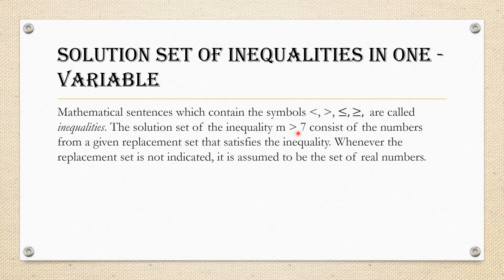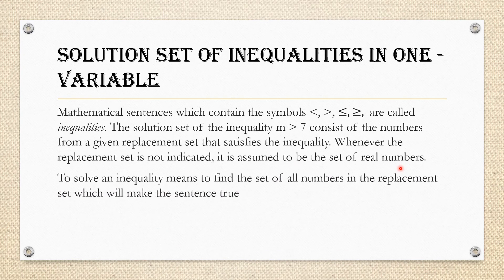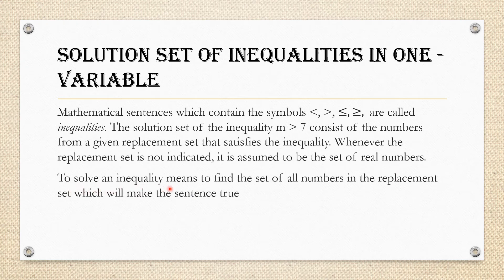The solution set of the inequality m greater than 7 consists of the numbers from the given replacement set that satisfies the inequality. Whenever the replacement set is not indicated, it is assumed to be the set of real numbers. To solve an inequality means to find a set of all numbers in the replacement set which will make the sentence true.